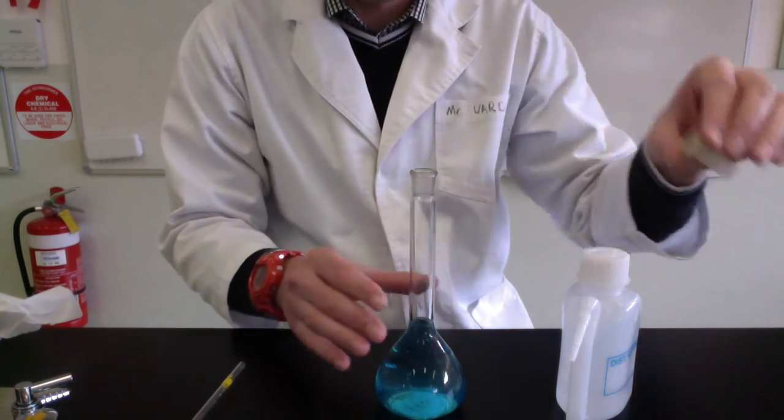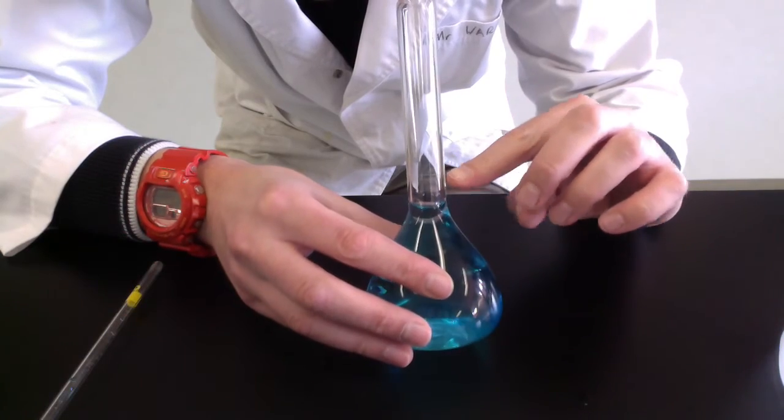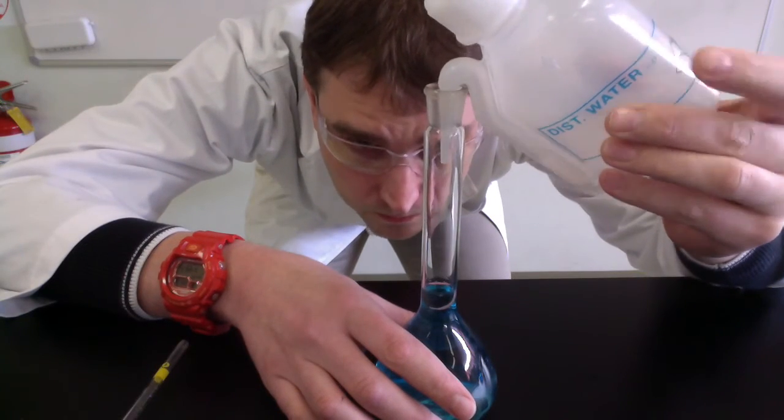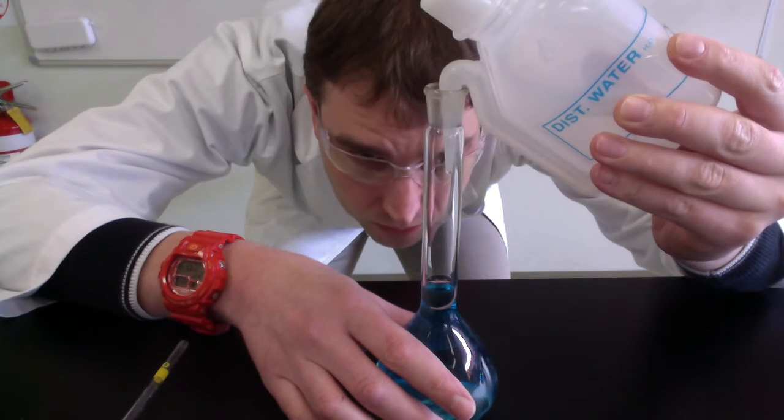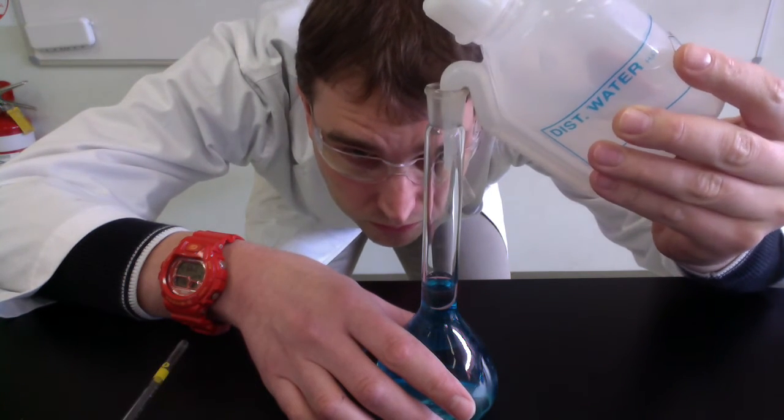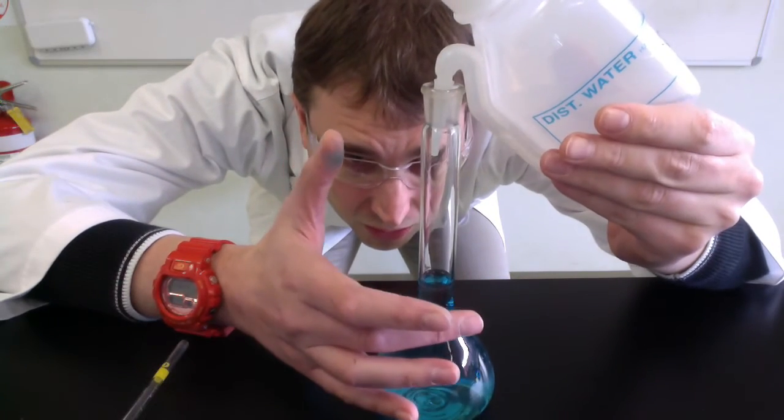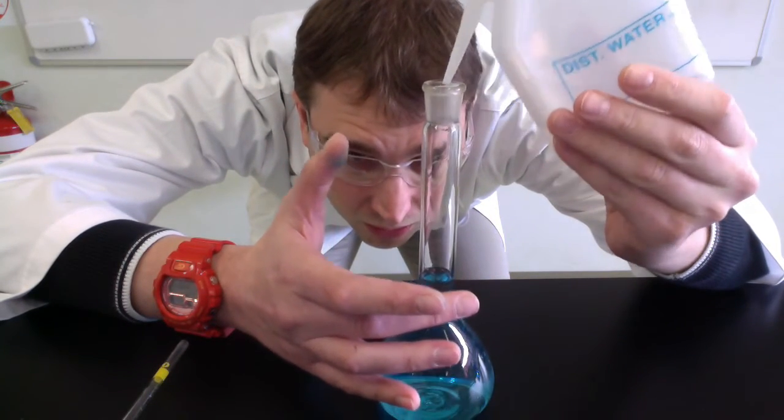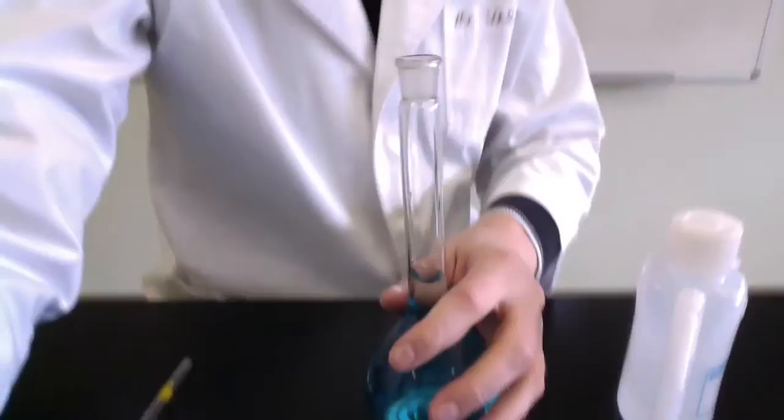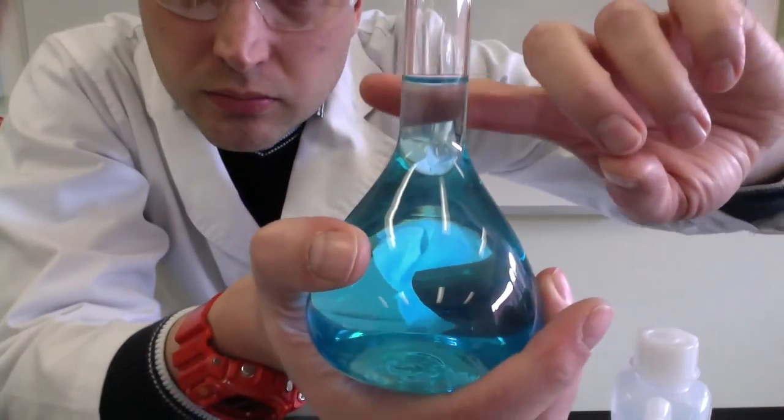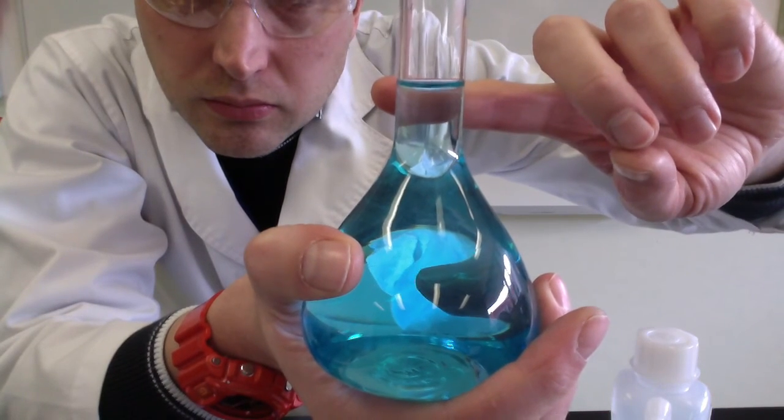Now is the bit where you need to get very careful. You're going to add drop by drop so you get right onto the etch line. You need to be eye level with the etch line. Add drip by drip. The addition of one drop should see the meniscus of the liquid sitting on the etch line. I'm using my finger to help see where the bottom of the meniscus is. I can see my meniscus is sitting on the etch line.